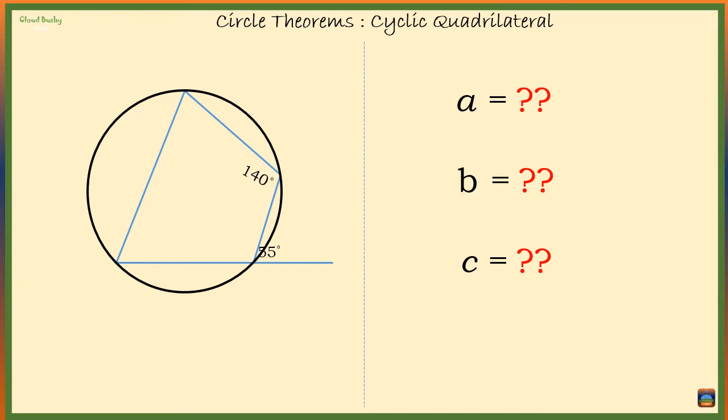Hello guys, in this example we're given a diagram with two known angles, one of which is an exterior angle of a cyclic quadrilateral. We are required to find the angles at A, B, and C.